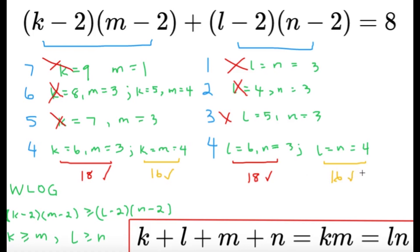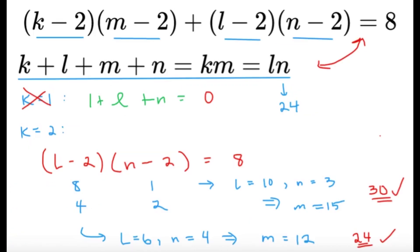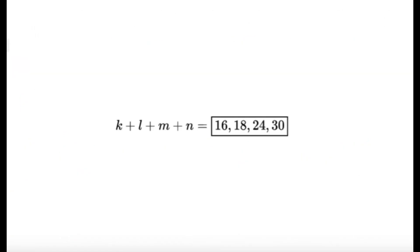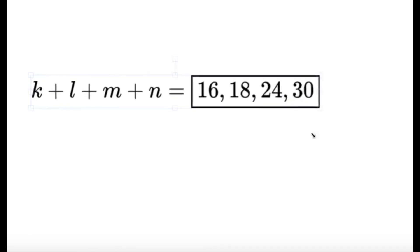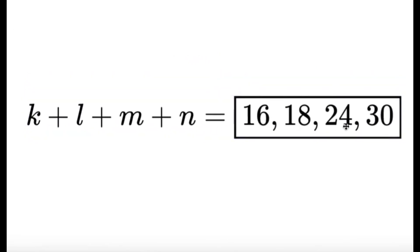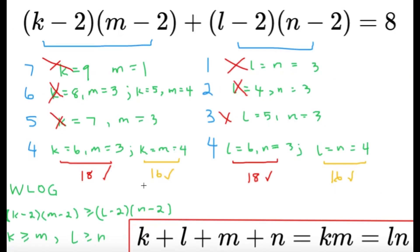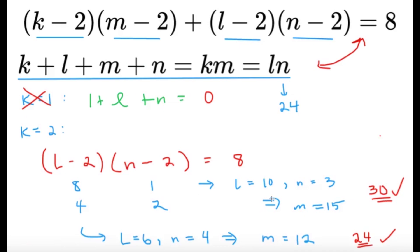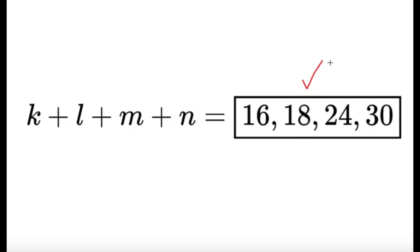Now that we've exhausted all possible cases, the possible values of K plus L plus M plus N are 16, 18, 24, and 30. You can go back and check the specific values of K, L, M, and N that work in each case. So these four values are our final answer. Hopefully you learned something new from this video — see you in the next one!